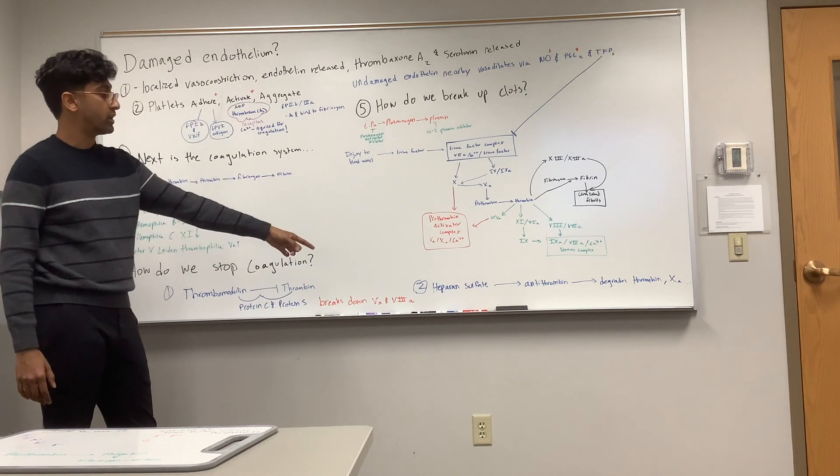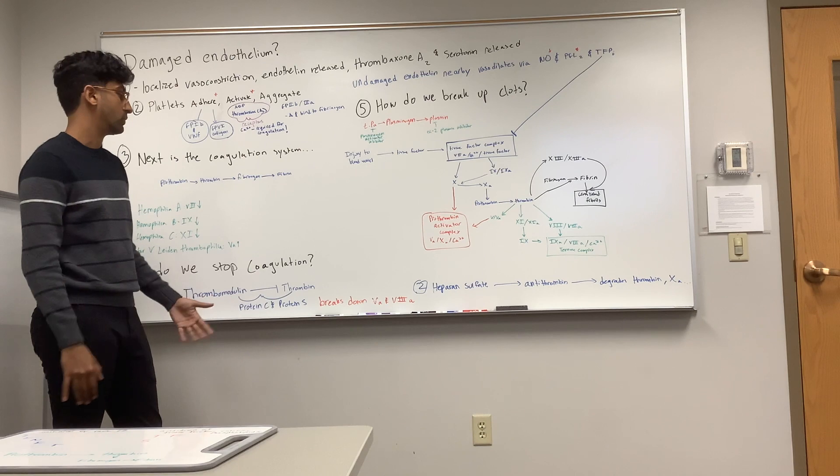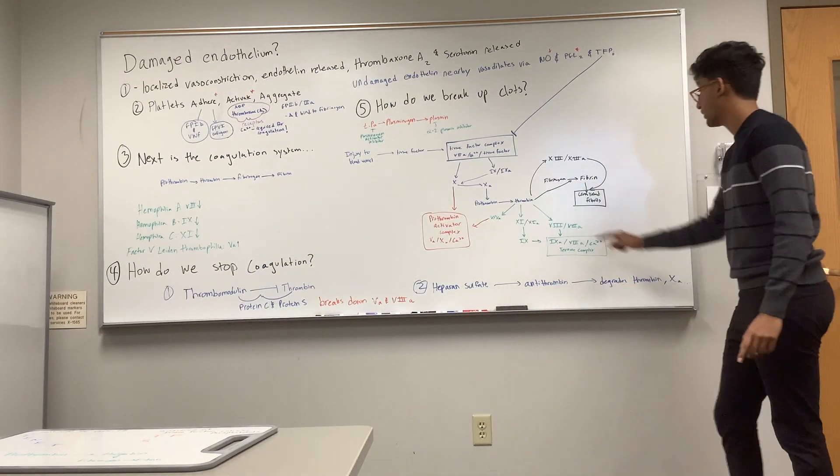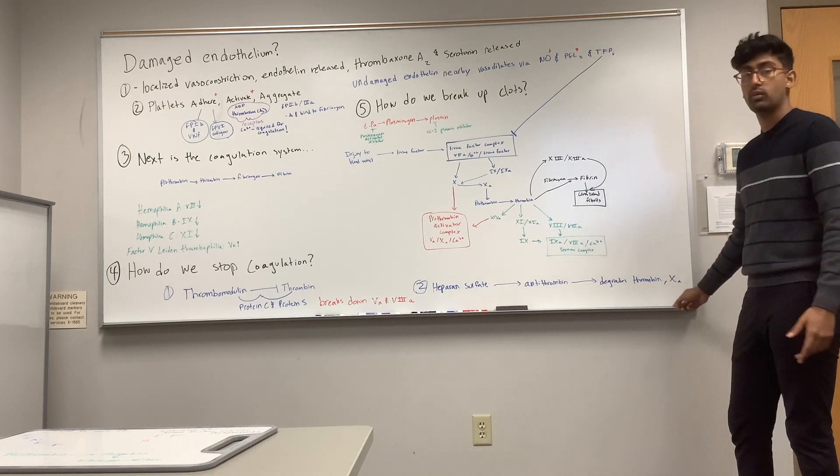And you have heparan sulfate, which is a different type of system but very similar. It's going to bind to antithrombin, and antithrombin is going to degrade thrombin, factor 10, and a few other factors.